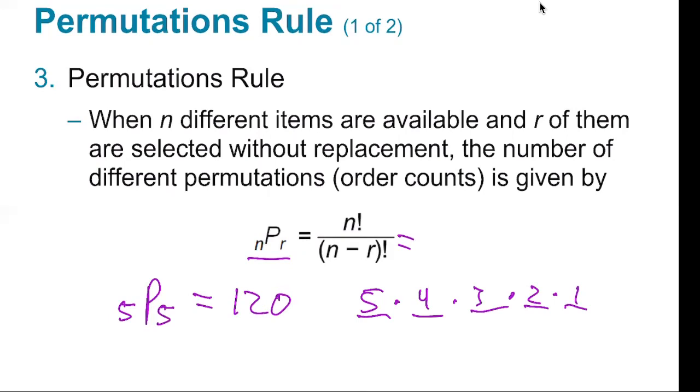Because look at this: this was five factorial. This is five subtract five factorial. Five factorial over zero factorial, and that's why we define zero factorial to be one. Here we get 120.